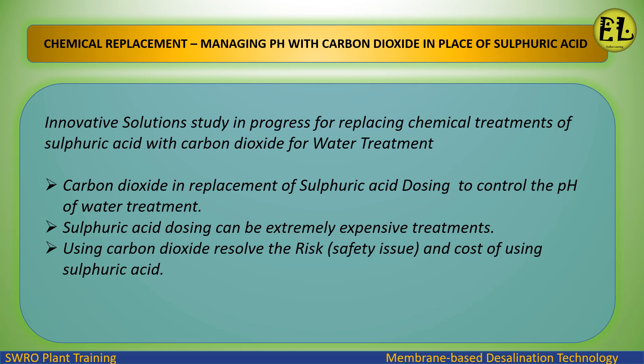An innovative solution is being studied for replacing chemical treatments of sulfuric acid with carbon dioxide for water treatment. Carbon dioxide is used in replacement of sulfuric acid dosing to control the pH of water treatment. Sulfuric acid dosing can be extremely expensive; using carbon dioxide resolves the safety issues and costs associated with using sulfuric acid.